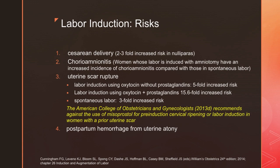A patient whose labor was induced is at high risk for caesarean delivery, especially among nulliparas. They are also at increased risk of chorioamnionitis, especially for those women whose labor is induced using amniotomy. There is also a risk for uterine scar rupture. When oxytocin is used without prostaglandins, the risk for uterine scar rupture is around five-fold. Labor induction using oxytocin with prostaglandins increases the risk about 15.6-fold, whereas spontaneous labor carries a uterine scar rupture risk of three-fold.